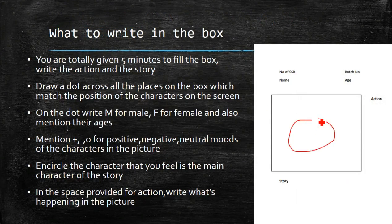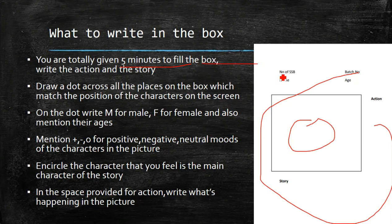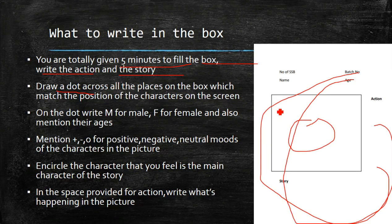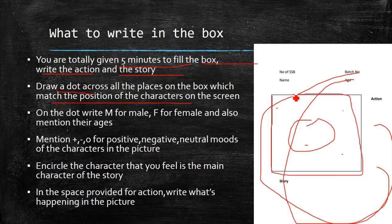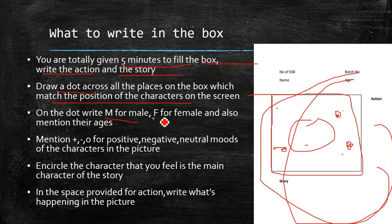So what do you write in this box exactly? You are given 5 minutes to fill the whole page — to write the action and the story. First, draw a dot across all the places on the box where you see the characters in the screen. Think of this box as your screen — if you see one character here, one here, and one here, draw small dots for each of them.